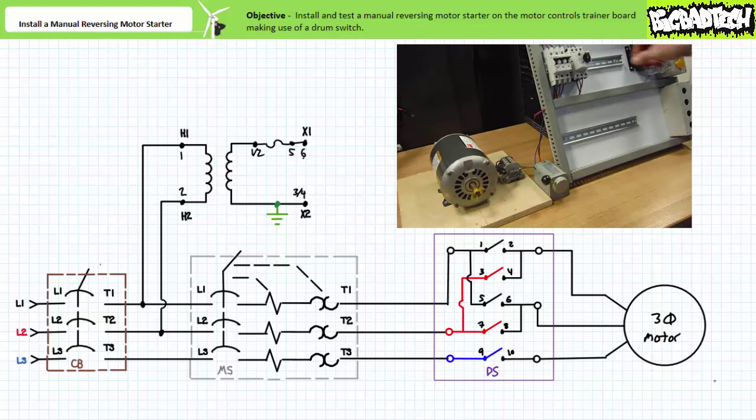In this case, applied phase sequence as seen by the motor is such that it rotates in one direction. To stop the motor, the manual motor starter is first open.